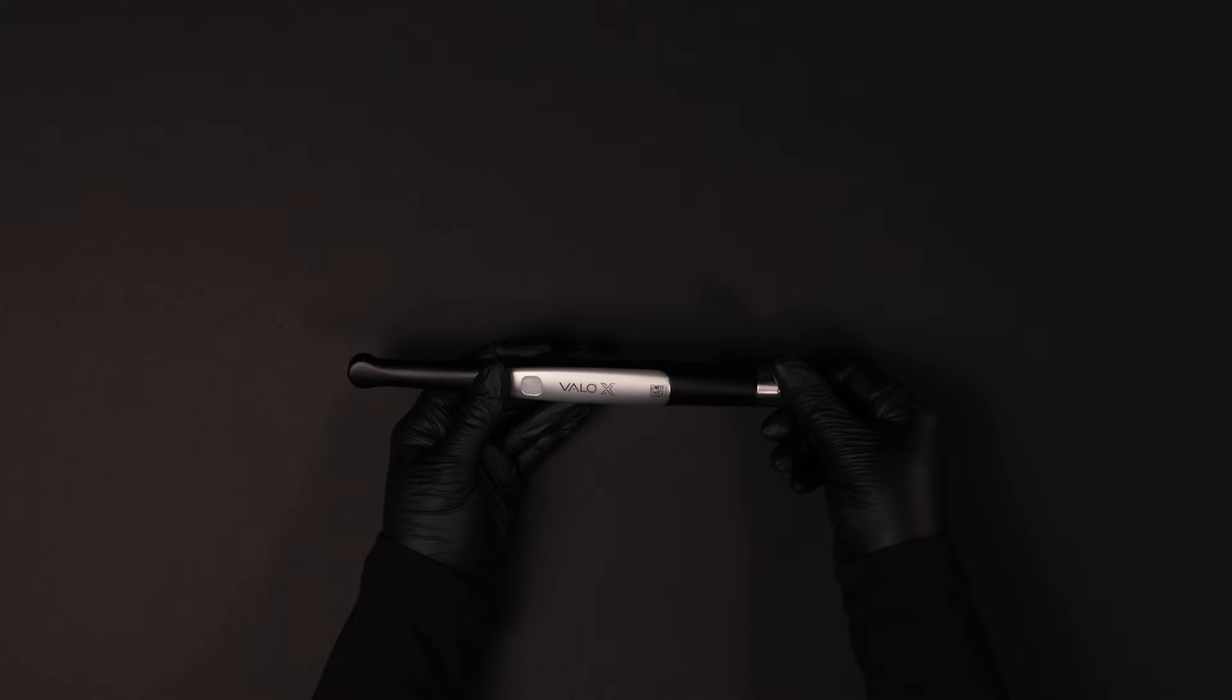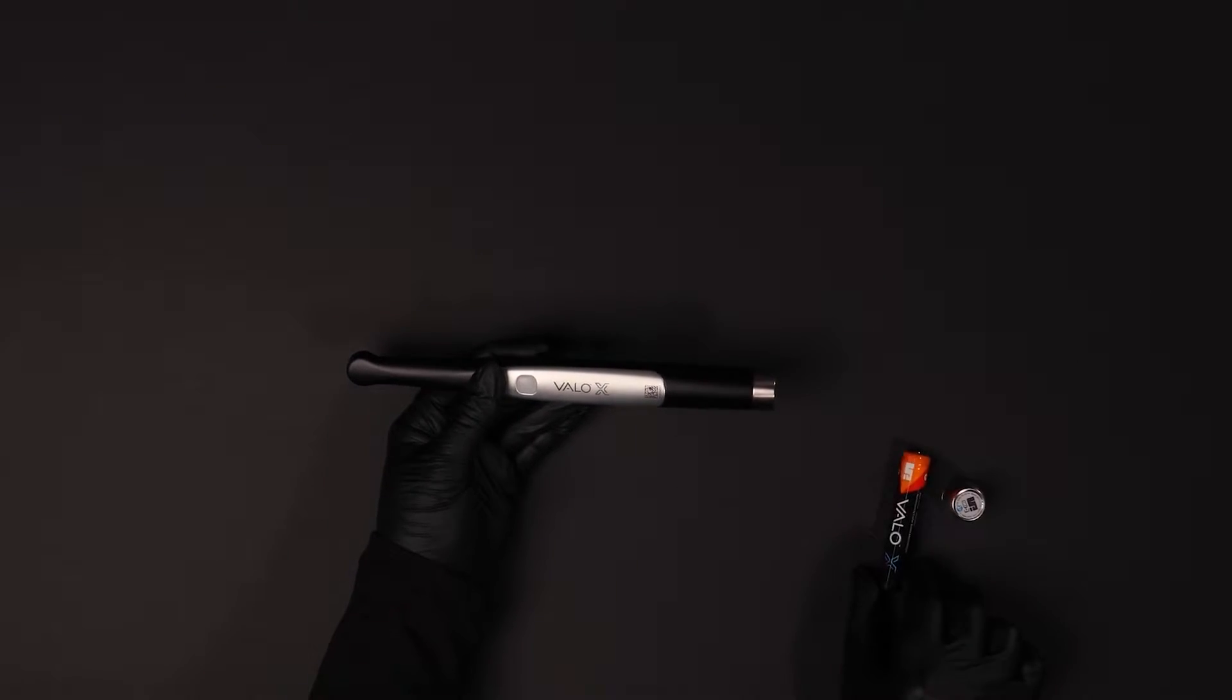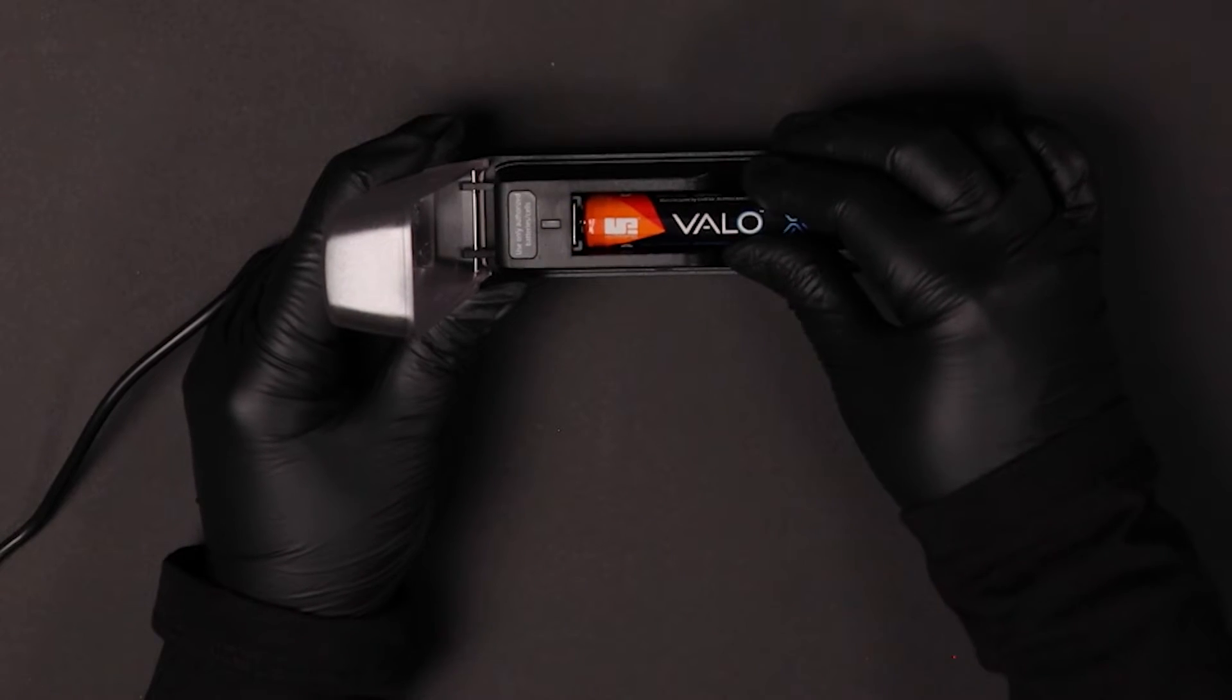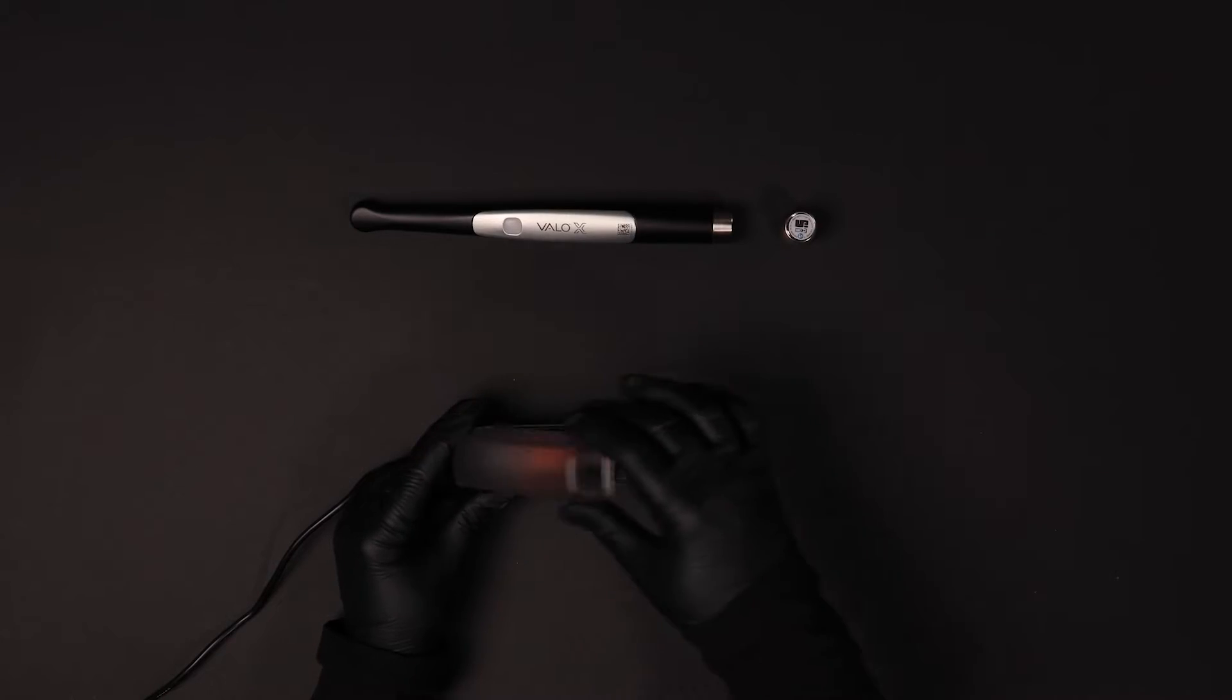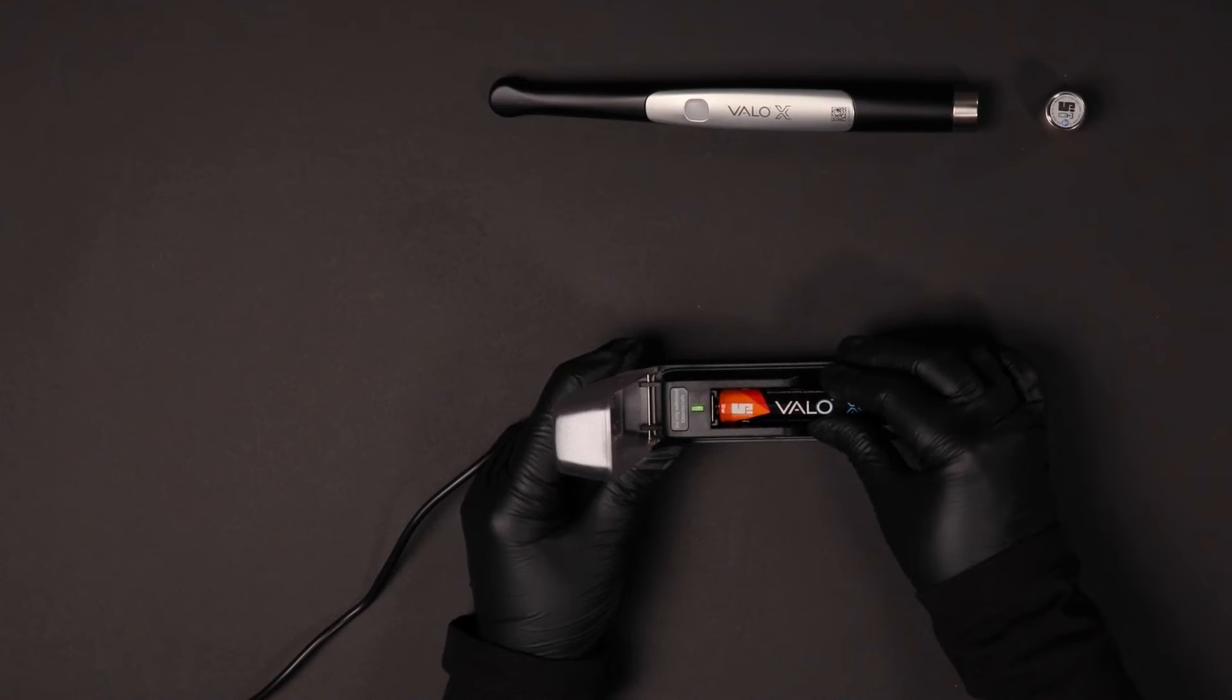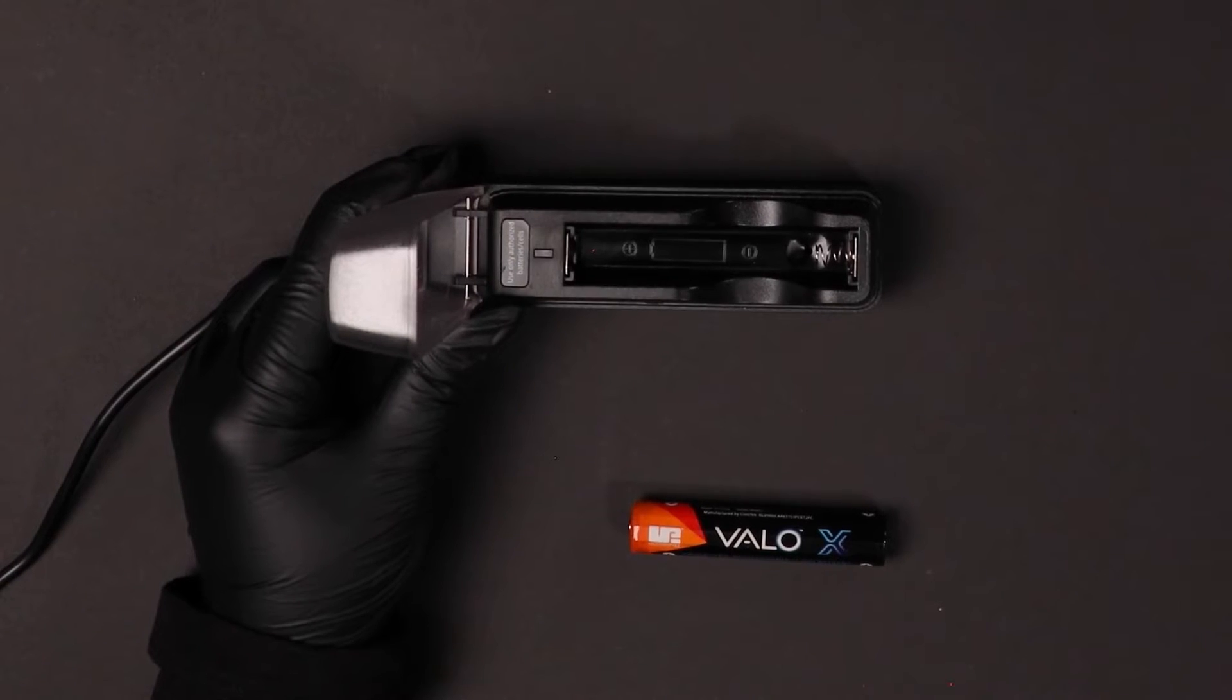To charge your VeloX battery, remove the battery from the VeloX unit. Insert the battery into the battery charger in the orientation shown in the charger. The battery can take one to three hours to fully charge. An amber light indicates the battery is charging. A green light indicates the battery is fully charged.